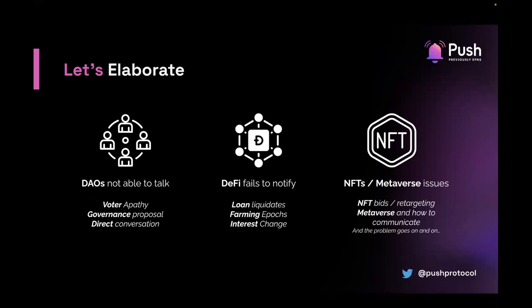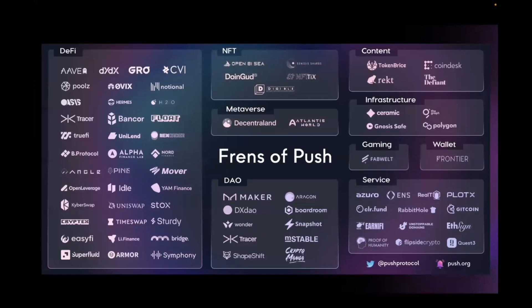I'm super passionate about DAOs and how online communities can coordinate. One particular application I find super interesting is notifying users whenever there's a new governance proposal. For DeFi, there are liquidation alerts. For NFTs, imagine an NFT marketplace integrating Push Protocol notifications — users could get notified whenever someone places a bid on their NFT. We have over a hundred collaborations for Push Protocol — pretty much Aave, YGX, Uniswap, Polygon, The Graph, Ceramic, and so on. We call them friends of Push.